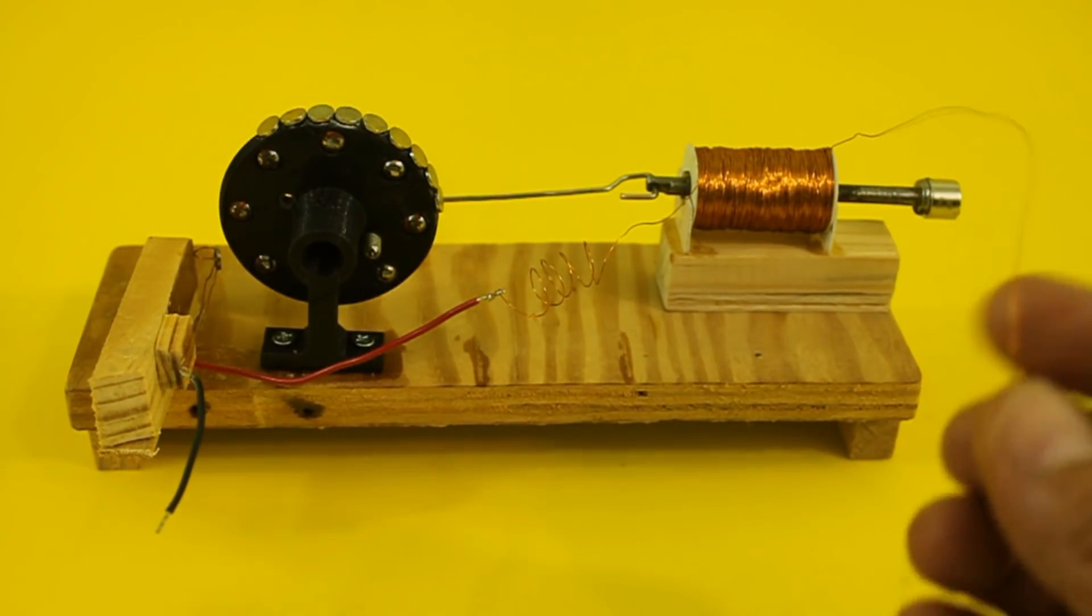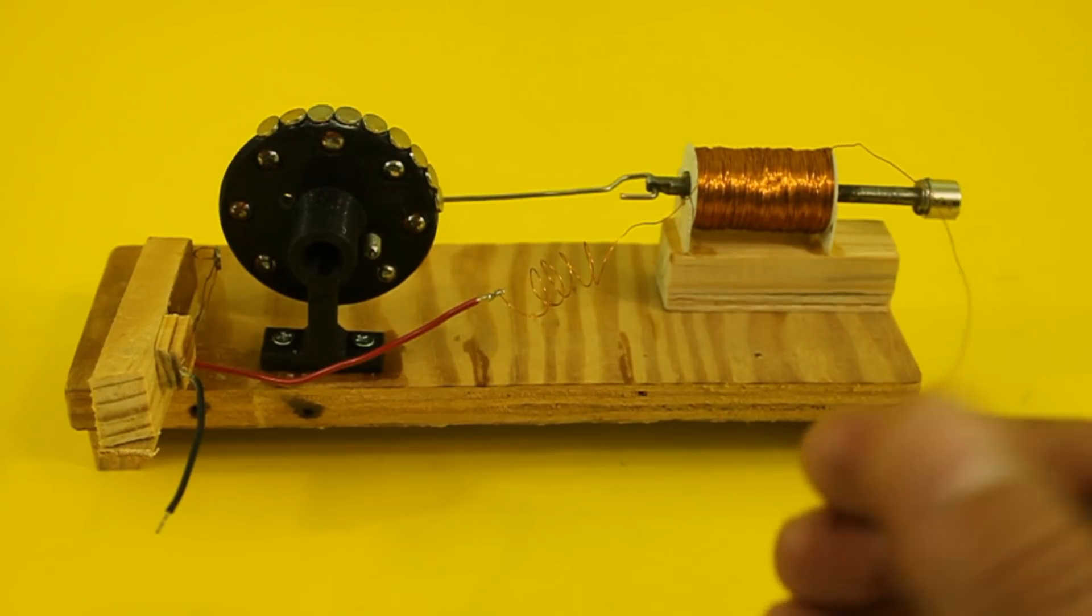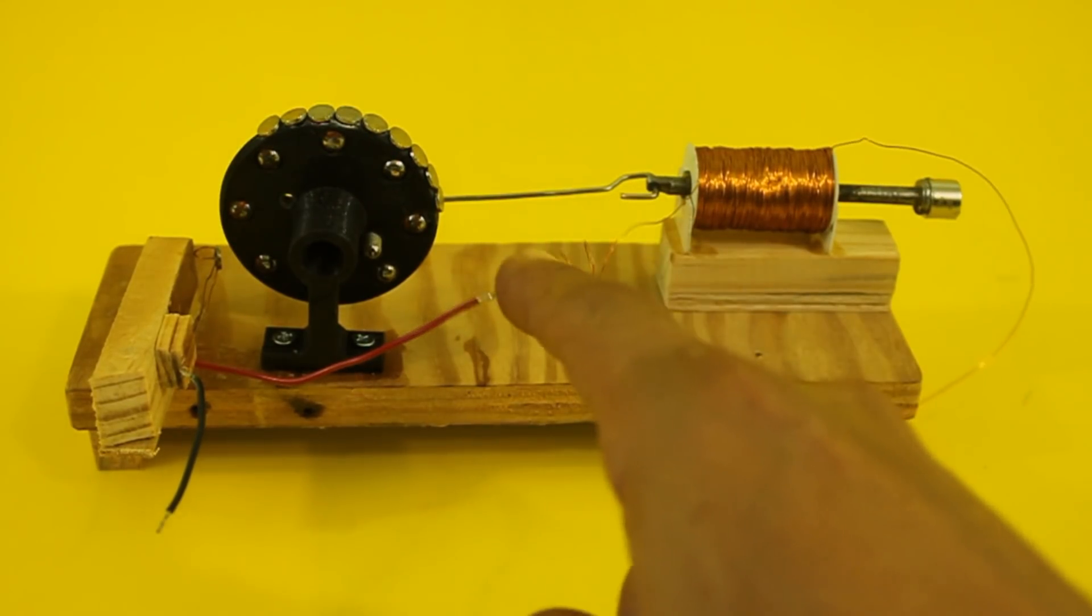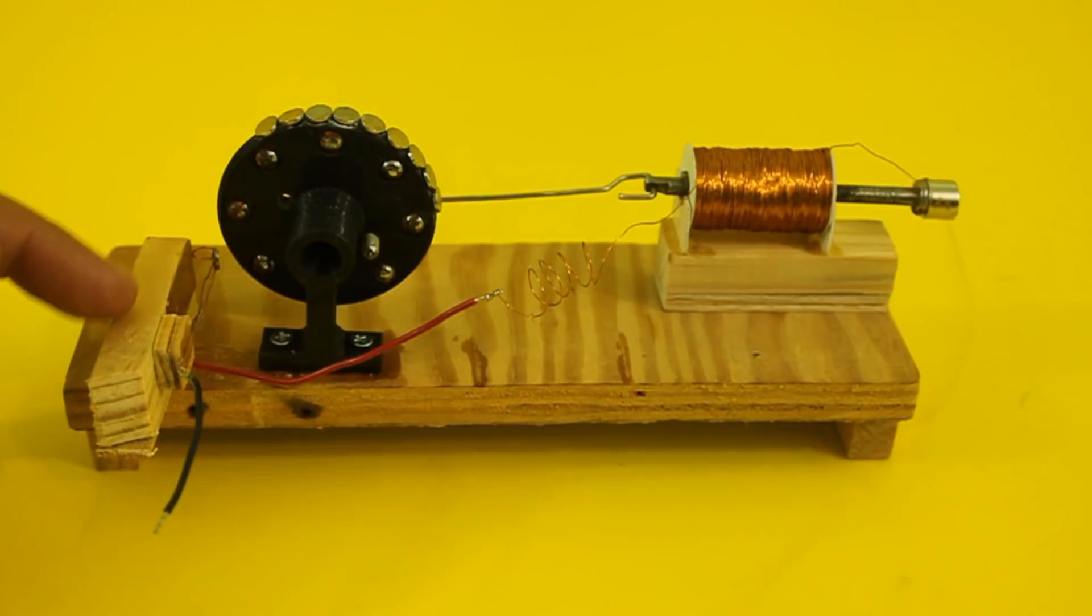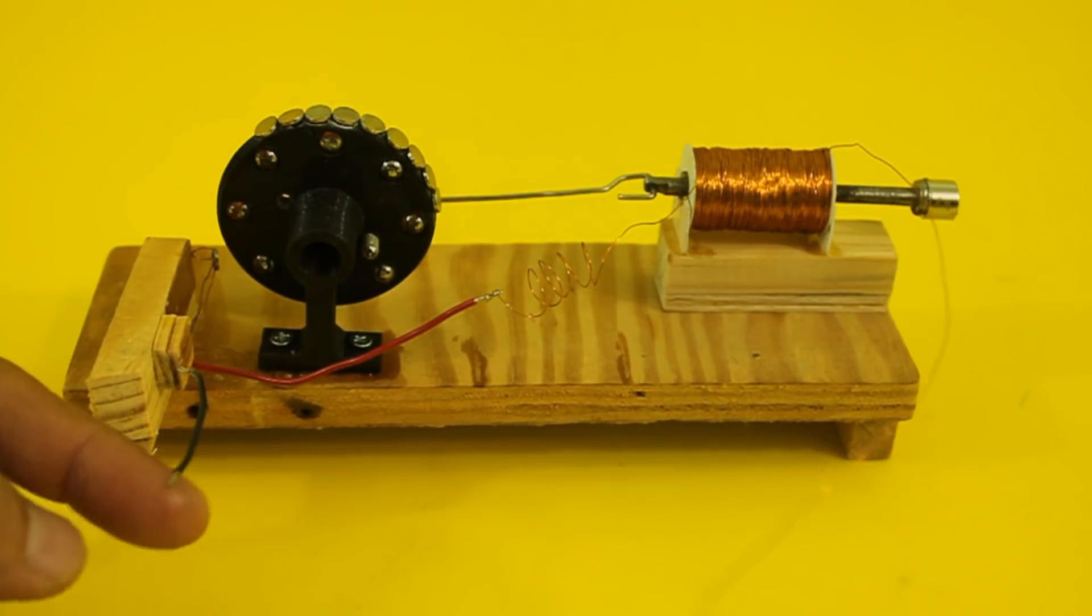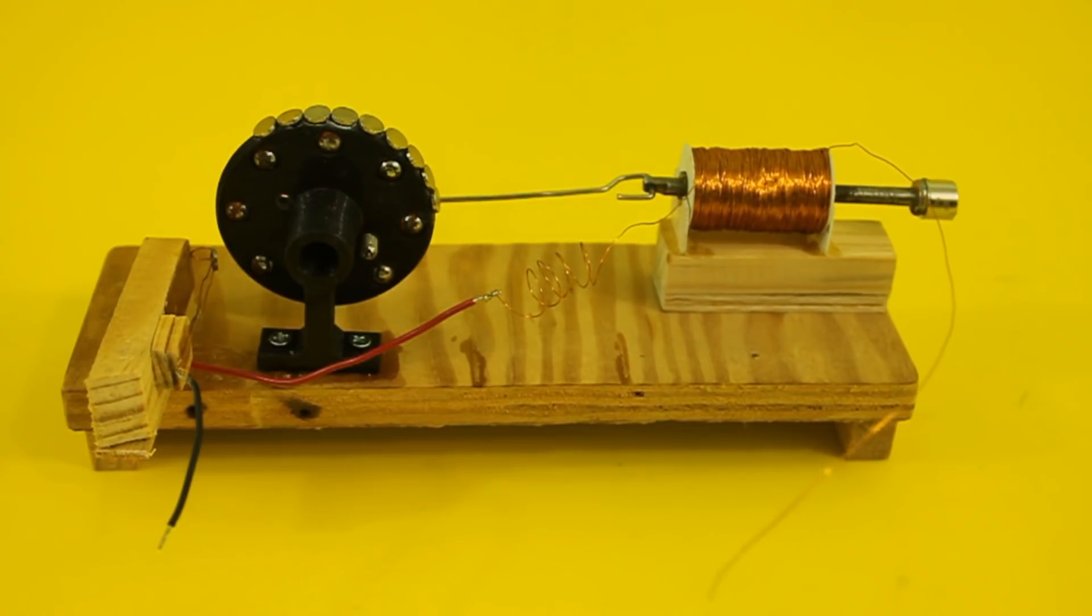In this terminal we connect the positive of the power supply. The other terminal of the solenoid goes to the switch and here we connect the negative of the power supply. We use DC current for this solenoid.